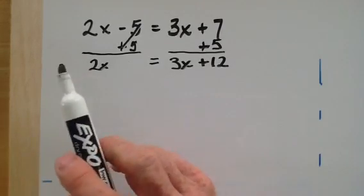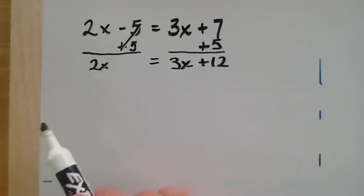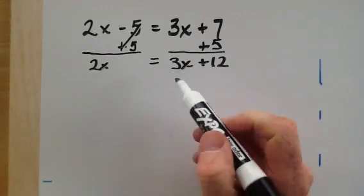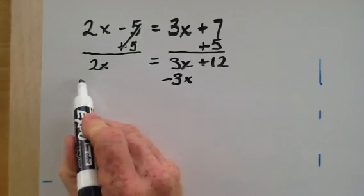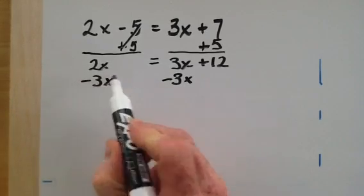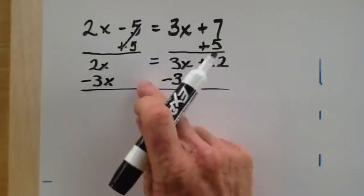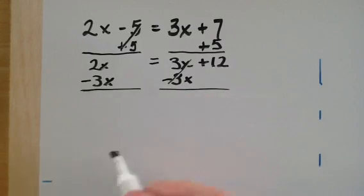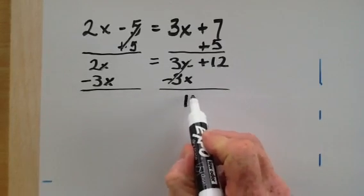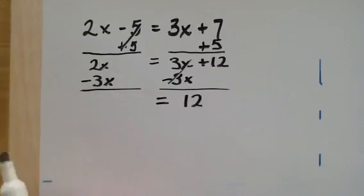Now I accomplished half my goal here in getting my constants together. Now I need to get these variables together. So if I have 3x here, I'm going to have to do its opposite and subtract 3x from, again, each side of my equation so that I can keep those balanced. So on this side again, these cancel. We'll have just the 12 straight down here.